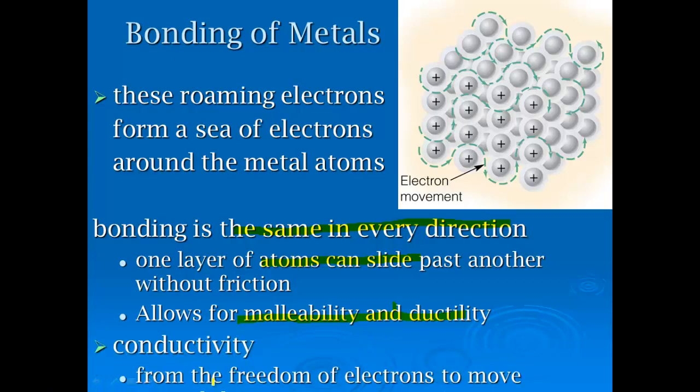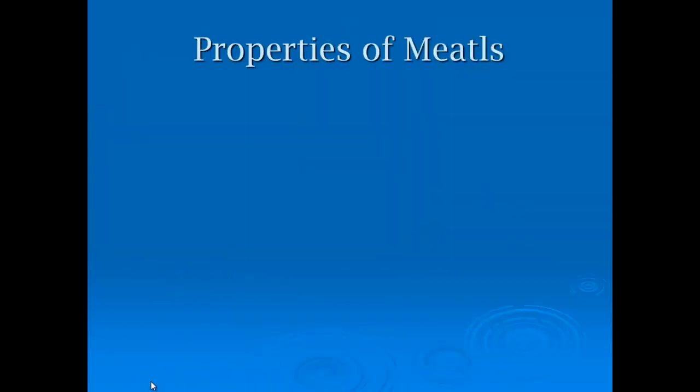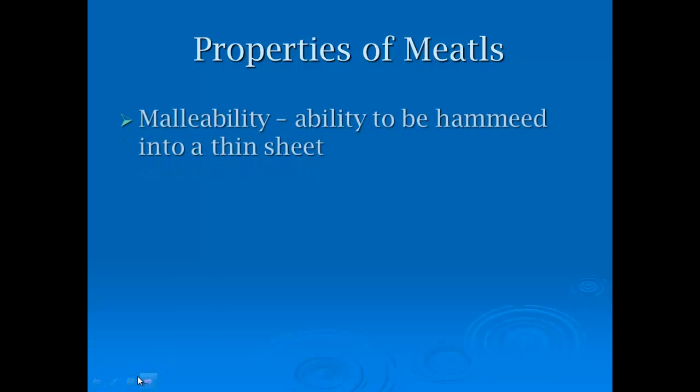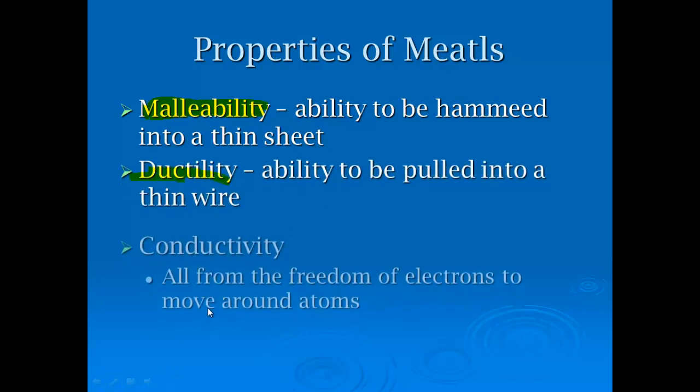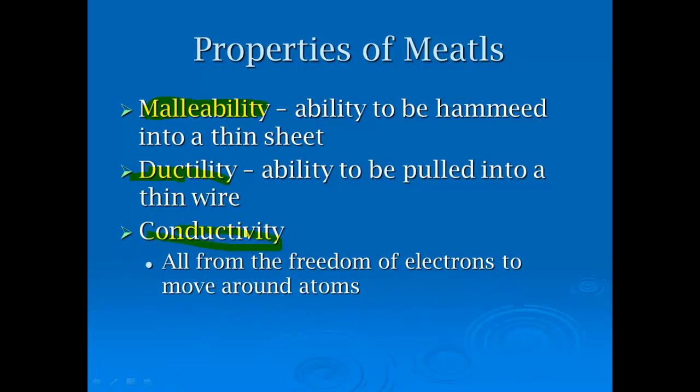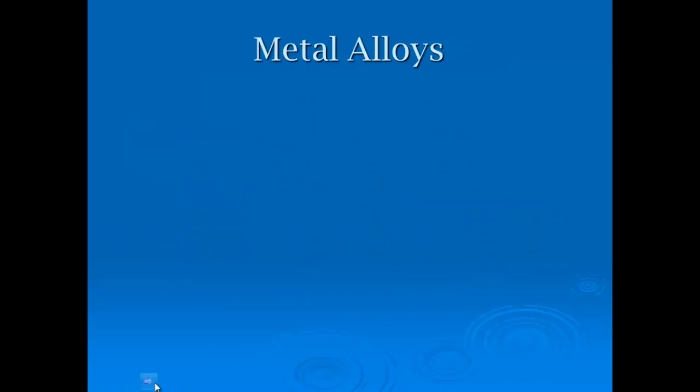And conductivity. Just as a reminder, malleability is the ability to be hammered into a thin sheet. Ductility is the ability to be pulled into a thin wire. And this is what was on the bottom of that last slide. The conductivity of both heat and electricity is simply all from the freedom of electrons, more so electricity here, but freedom of the electrons to move around the atoms. And if those electrons can move, then electrical current can be passed through, and we get good conductors.